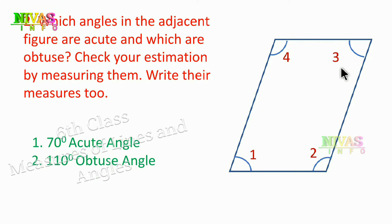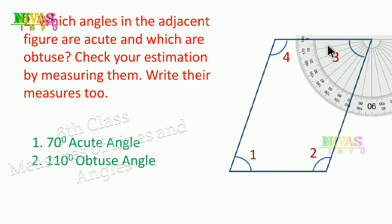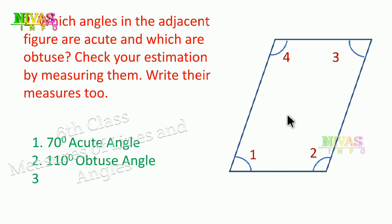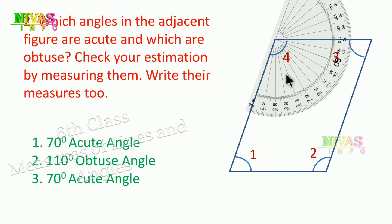Next, the third angle is less than 90 degrees. Using the protractor it shows 70 degrees, so this is also an acute angle. Next, the fourth angle is greater than 90 degrees. Using the protractor the measurement is 110 degrees, so this is also an obtuse angle.